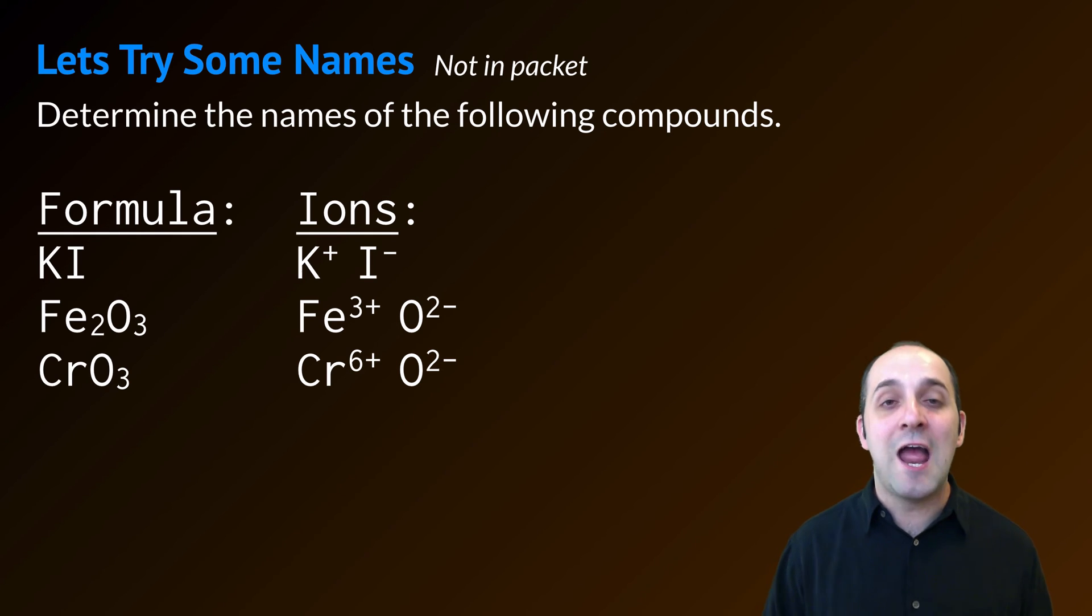So for instance, in Fe2O3, I know that oxygen is a 2- ion, and since there are three of them, I know that that's a total of -6. That tells me that iron has to be +6. And since there are two of them, I know that that has to be 3+. Does that make sense? If it doesn't, take a moment and note that before we move on.